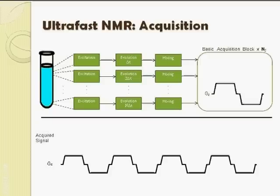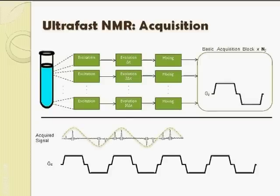As a result, the peaks in our acquired signal get modulated by the chemical shifts, as shown figuratively here. This illustrates the basic scheme of ultrafast NMR.